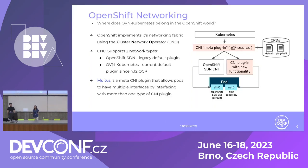OpenShift networking: OVNK is the default CNI in OpenShift. OpenShift is Kubernetes plus a bunch of operators, and even for networking we use an operator called the Cluster Network Operator. That is in charge of deploying all the daemon sets and deployments required for the network infrastructure to come up. CNO supports two plugins: the legacy one, which is OpenShift SDN, and the new one — OVN Kubernetes — which is the default from the 4.12 release.